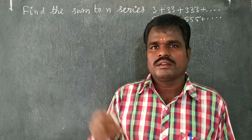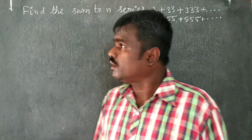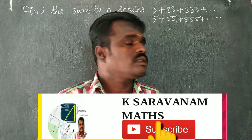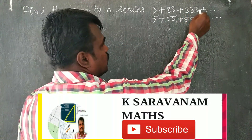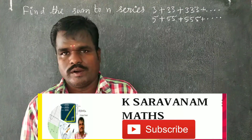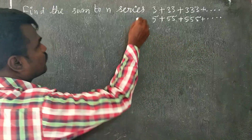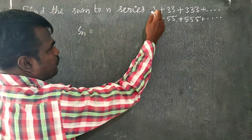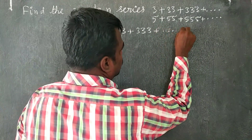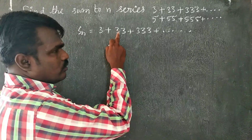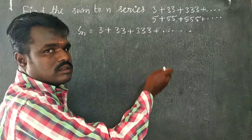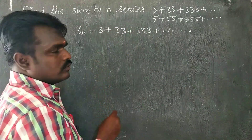Hi friends, today's topic is geometric series. In the geometric series, we find the sum of n terms. The first sum is 3 plus 33 plus 333 and so on, and 5 plus 55 plus 555 and so on. We need to determine whether this is a geometric series or arithmetic series, and then convert it into geometric series form.